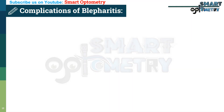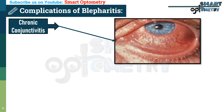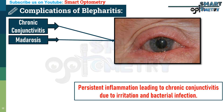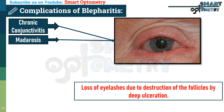Complications of blepharitis are mainly seen in the ulcerative form and are often serious. First: chronic conjunctivitis — persistent inflammation in blepharitis can spread to the conjunctiva, leading to chronic conjunctivitis due to continuous irritation and bacterial infection. Second: madurosis — loss of eyelashes caused by deep ulceration, which destroys the hair follicles, resulting in permanent eyelash loss.